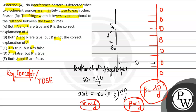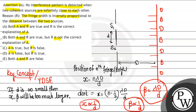So if d is infinitely small, then x and β will become very large — meaning the fringe width becomes enormous. Coming back to the assertion: no interference pattern is detected when two coherent sources are infinitely close — this is a true statement. And the reason is also true and is indeed the correct explanation of the assertion. So option A is the correct answer.